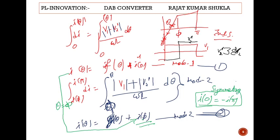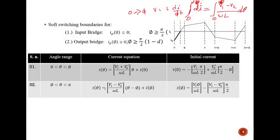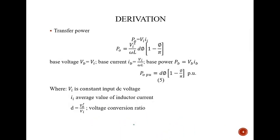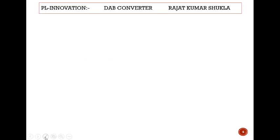Now you can get the power equation. Power output equals V input times I input, assuming no losses in the converter circuit. The input current is just equal to IL. V input is a constant DC value, and IL is integrated from 0 to pi upon pi times d theta. Using equations 1 and 2, you can easily get the power output equation for designing purposes.